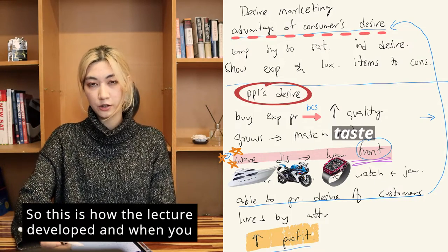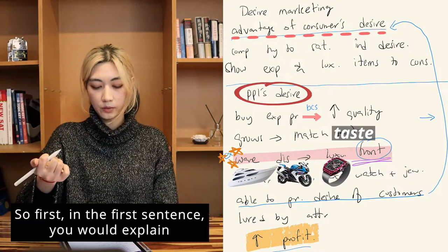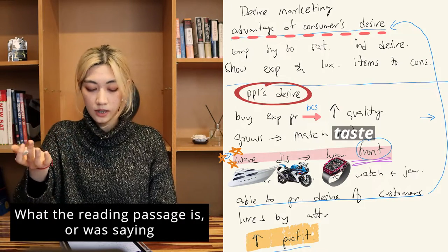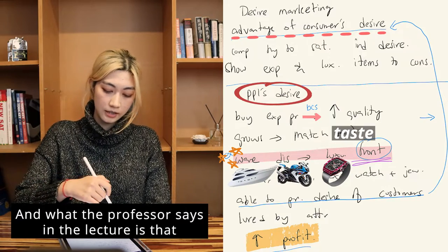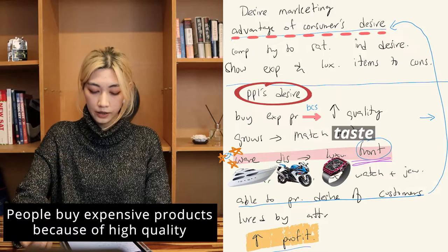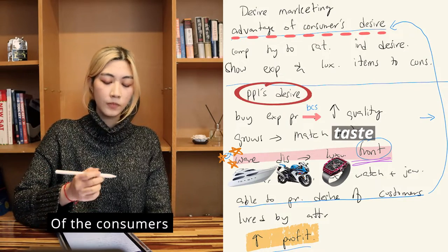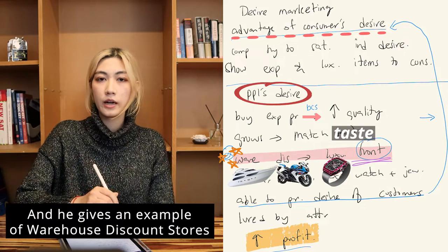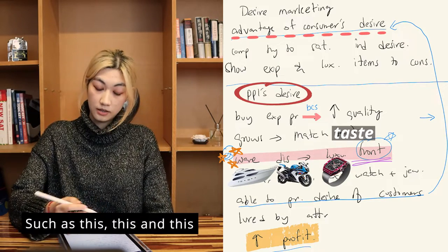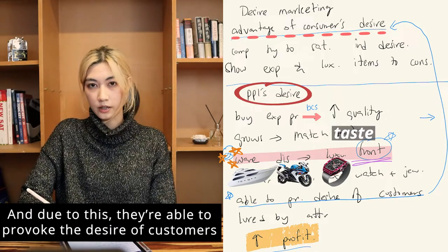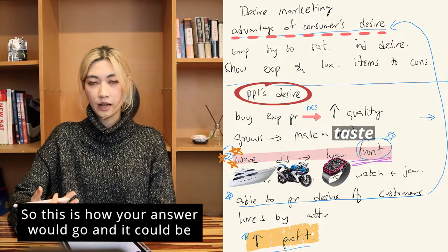When thinking about how to answer this question: in the first sentence, explain what the reading passage said — desire marketing is taking advantage of consumers' desires. Then describe what the professor said: people buy expensive products because of high quality, and this desire grows when the object matches consumers' taste. He gives the example of warehouse discount stores that show luxury items at the front, which provokes customer desire and gains profit. That could be a model answer.